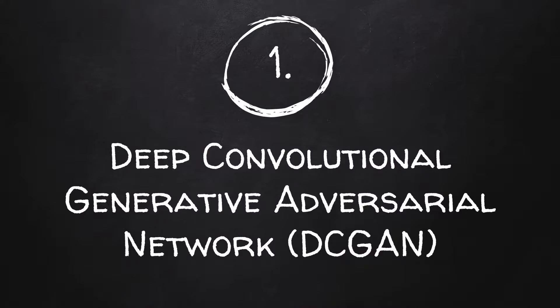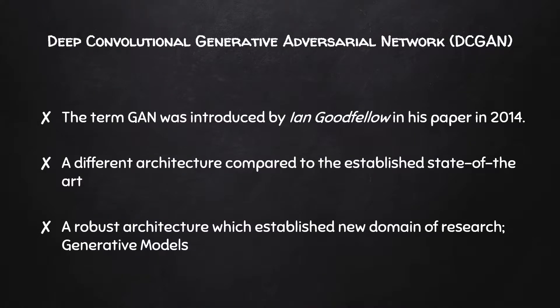Deep Convolutional Generative Adversarial Network. The term GAN was first introduced by Ian Goodfellow in his paper in 2014. It was a drastically different architecture compared to the ones already established in the field.